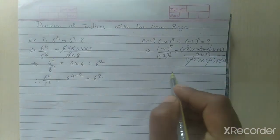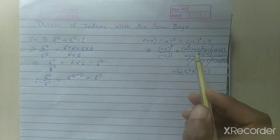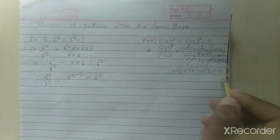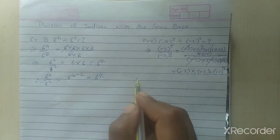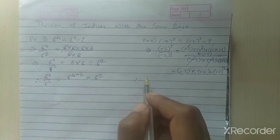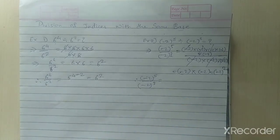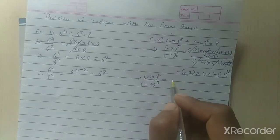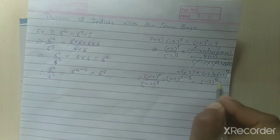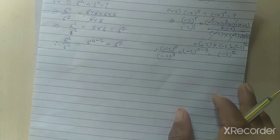After cancellation, minus 2 multiplied by minus 2 remains — 2 times. So the answer is minus 2 raised to 2. Using the formula: minus 2 raised to 5 minus 3 equals minus 2 raised to 2. This confirms our answer by formula.